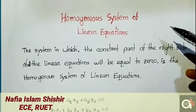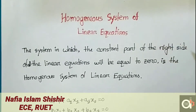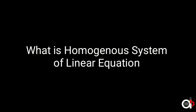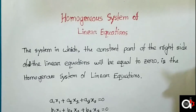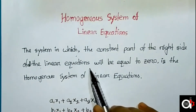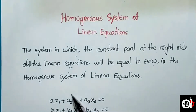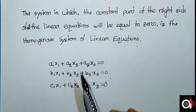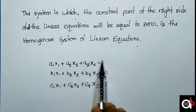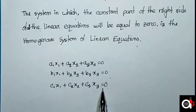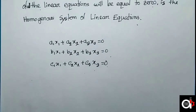Assalamualaikum. Today's topic is the homogeneous system of linear equations. A homogeneous system is a system of linear equations in which the constant part on the right side of all linear equations is equal to 0. This is the homogeneous system of linear equations.